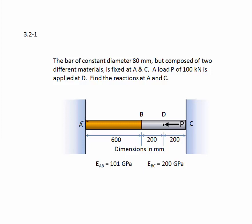The member is supported by a wall at A and a wall at C. There are two different materials of which it's composed, each with its own modulus of elasticity, which is given here. We have the dimensions. We have everything we need to solve this problem.